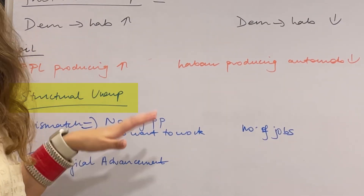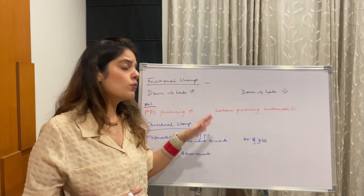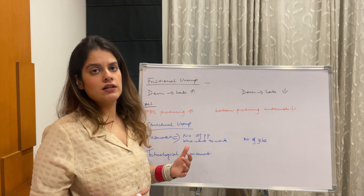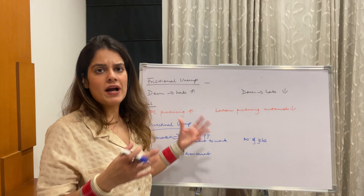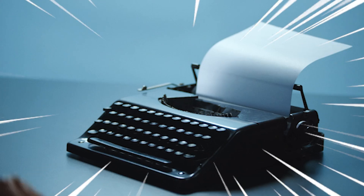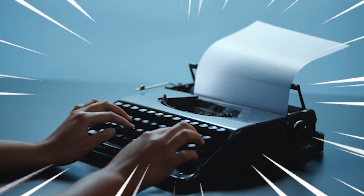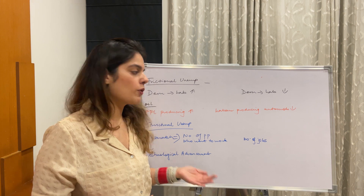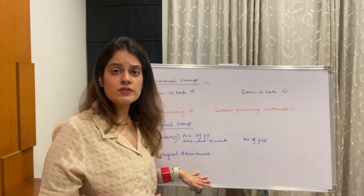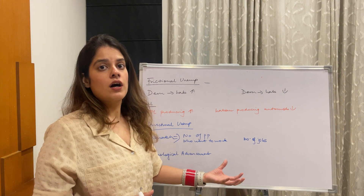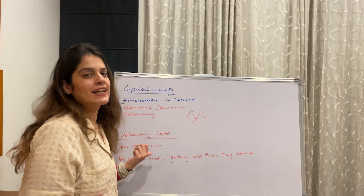Second is structural unemployment, which arises when there is a mismatch between the number of people who want to work and the number of jobs available. This happens when the structure of the economy changes — for example, due to technological advancement. Years back, before computers, many people worked as typists writing files. After technology advanced to computers, so many people lost their jobs because one computer could do the work of 10 manual labourers. This is structural unemployment, and it also happens as an economy grows and shifts to more capital rather than labour.